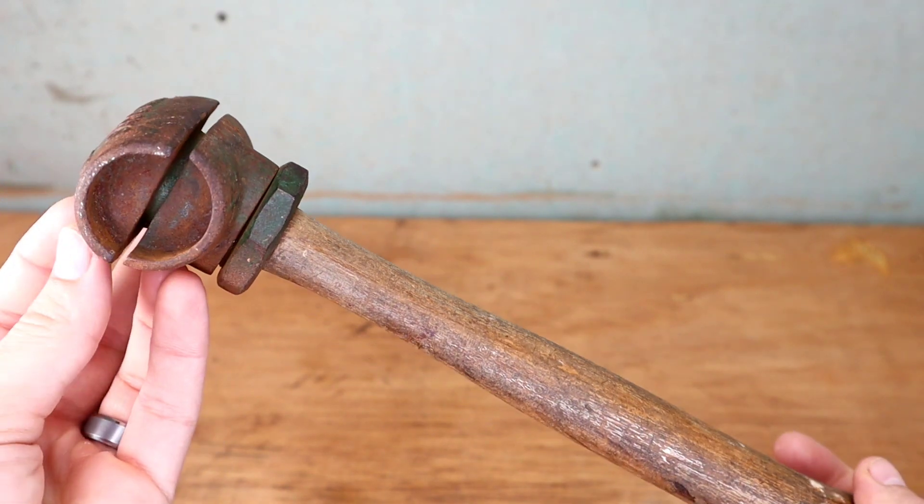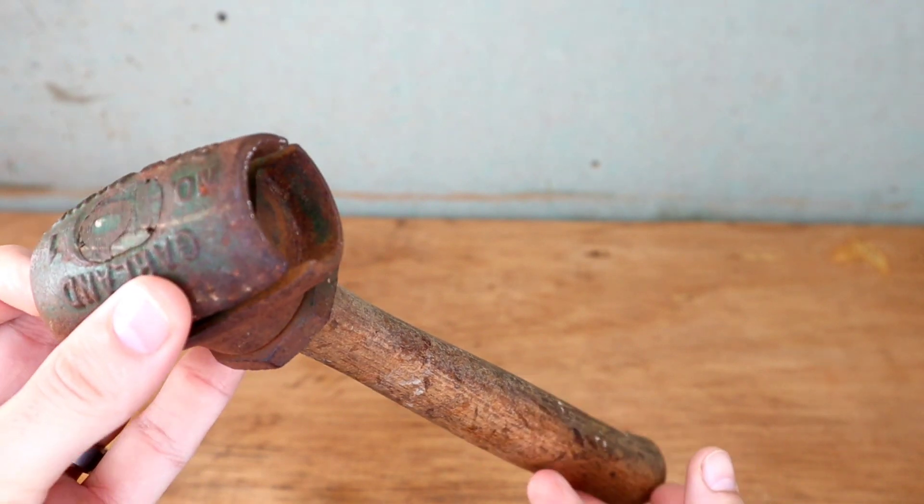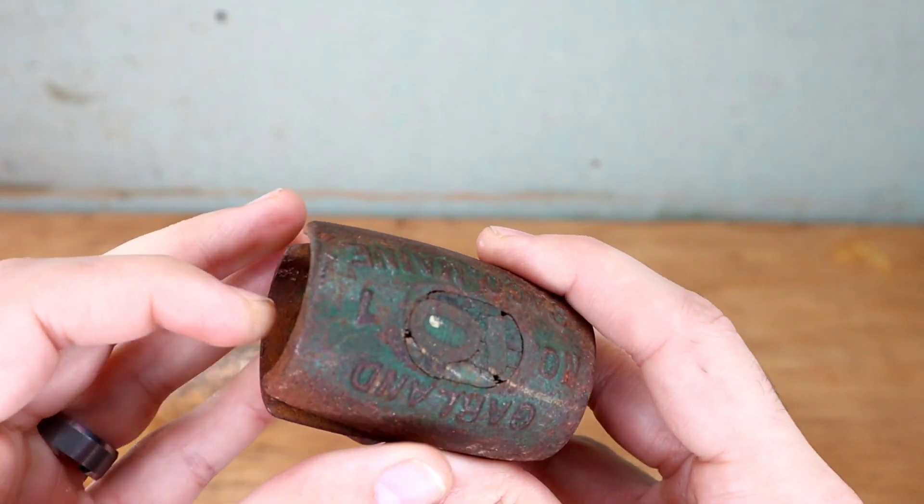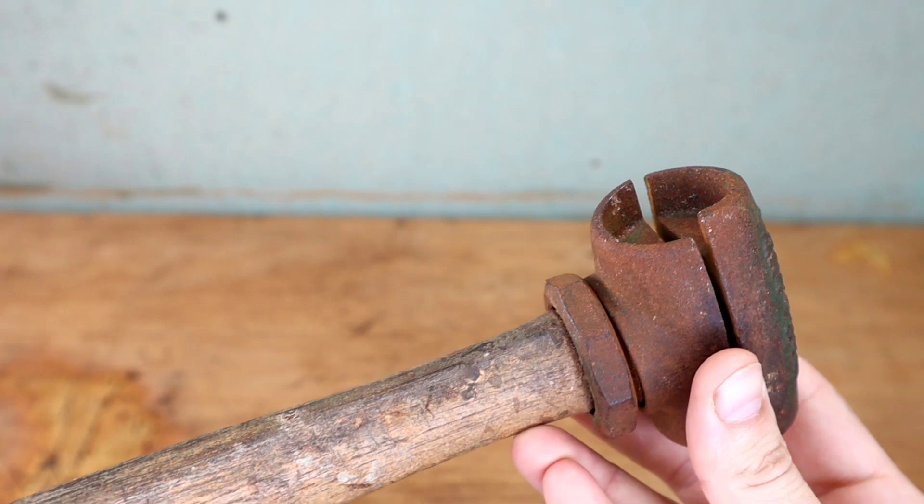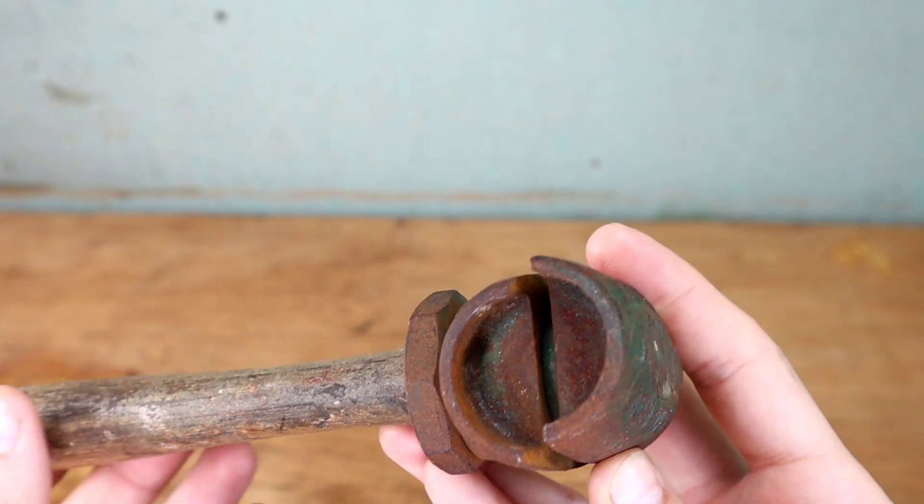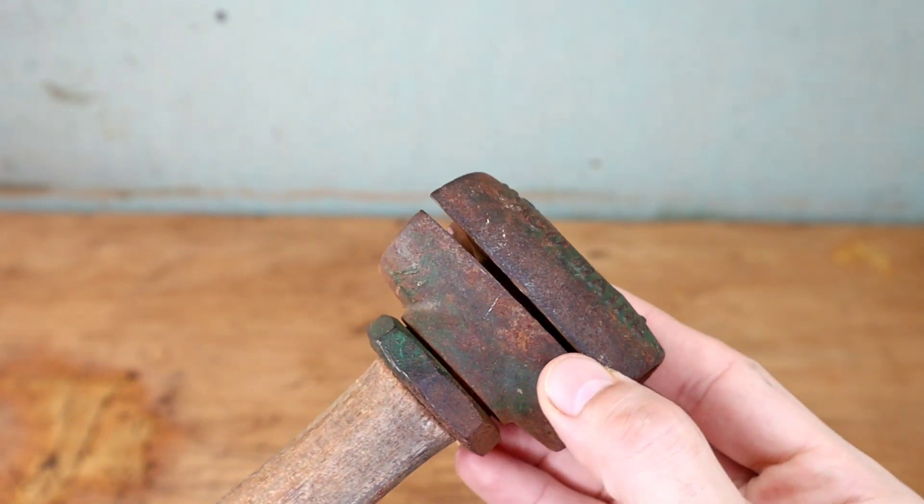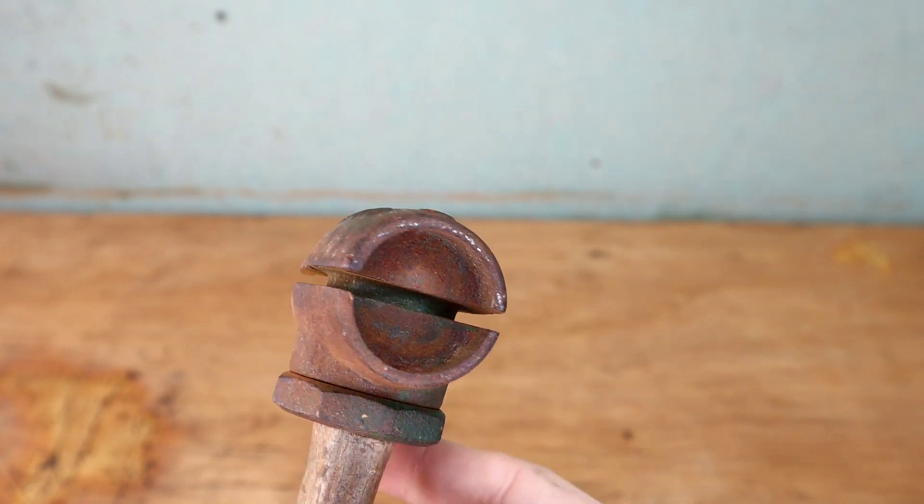We'll be selecting a new face type because this one's missing, installing a new hickory handle, fixing the threads for the nut, filing the high spots, filling in the low spots, making a new roll pin, removing the rust, and bringing one of the letters back that's been ground away.